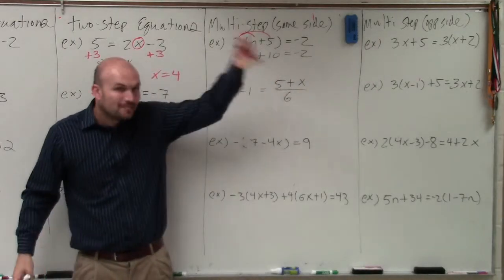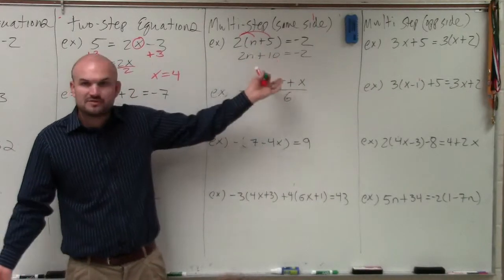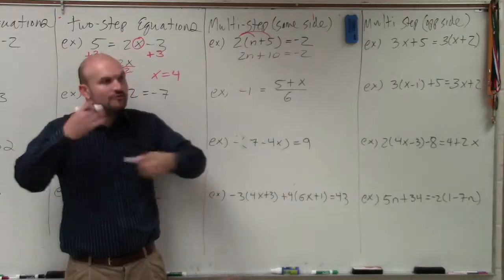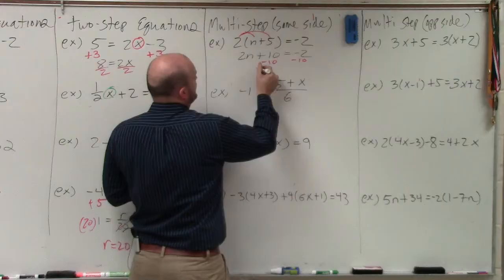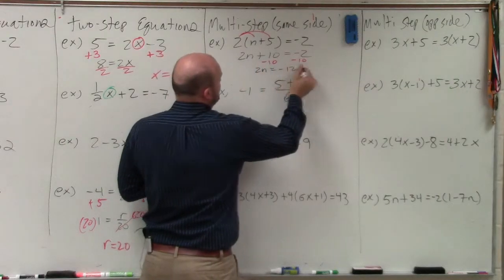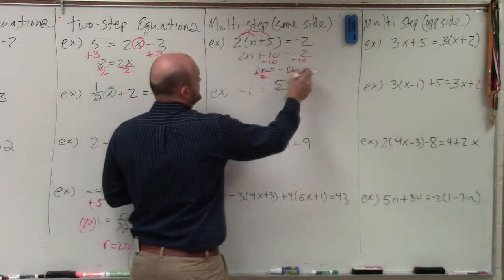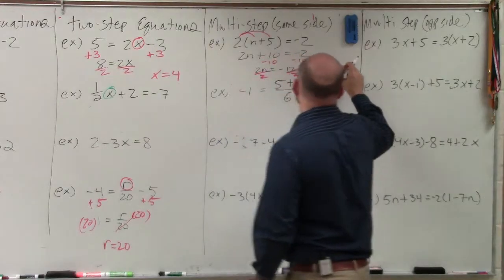Now by simplifying it, I just have a two-step equation, which hopefully with practice is pretty easy. Subtract 10, and you get 2n equals negative 12. Divide by 2, and n equals negative 6.